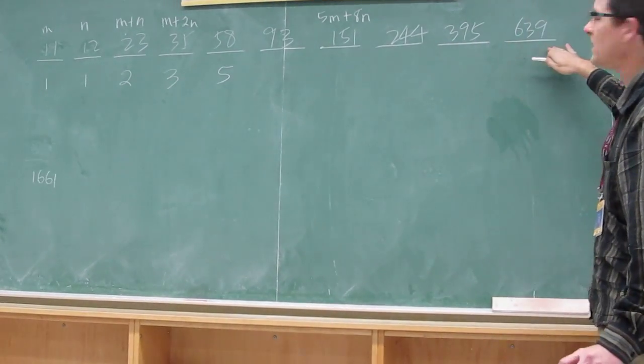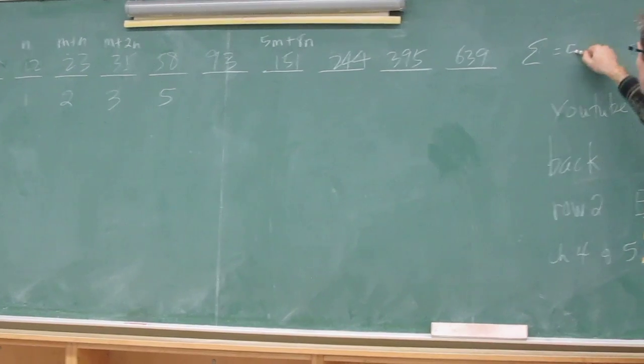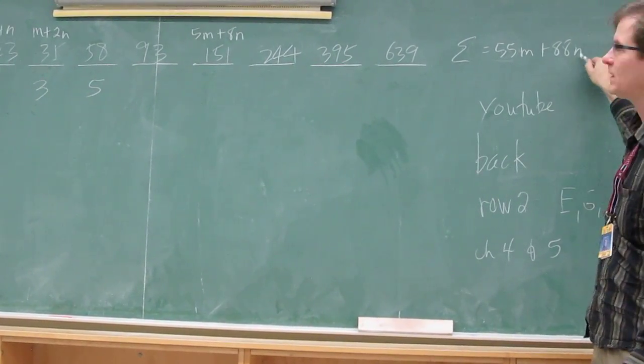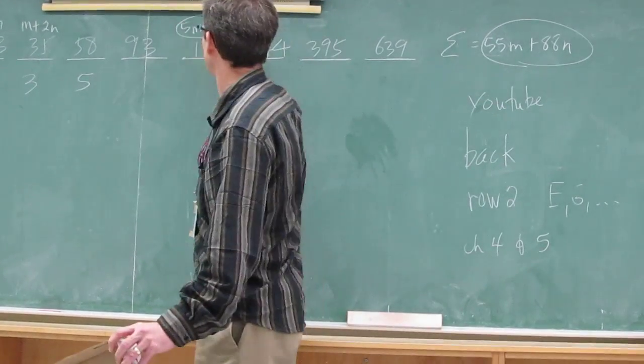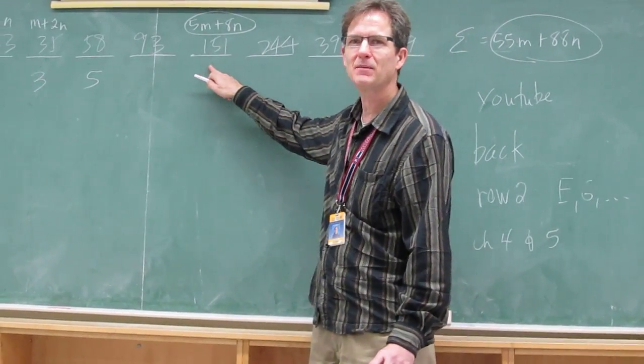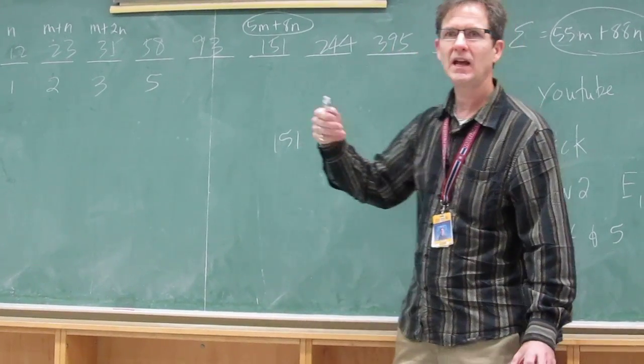And if you add up the ten numbers, the sum of the ten numbers is 55m plus 88n. You can check all this, but it's true. So that number is how many times this number? 11. So as soon as the person gets to the seventh blank, I just write down the number and I add 10 times it.